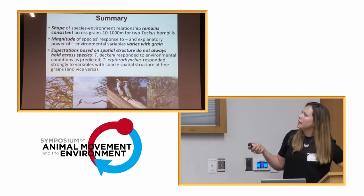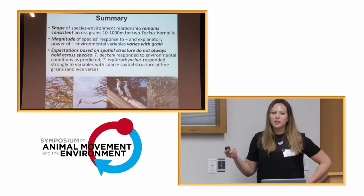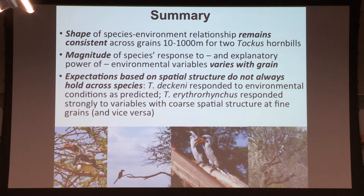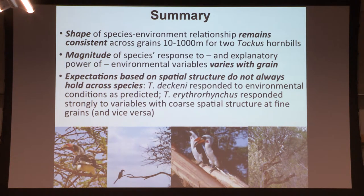In summary, what can we say about scale dependence and species-environment relationships from these multi-grain modeling results? Some species respond as expected. The shape of species-environment relationships remains consistent — no models showed a linear term shift to a squared, cubic, or log term. The response shape remains similar across spatial grains. However, the importance and explanatory power of individual variables definitely changed across grains.